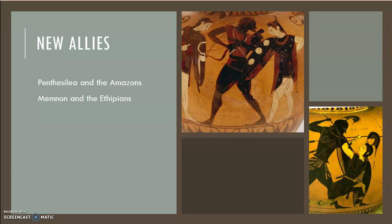After Penthesilea and the Amazons are killed, a new hero appears whose name is Memnon. Memnon is very much like Achilles in that his mother is a goddess — the goddess of dawn. Memnon and his people are the Ethiopians. I misspelled that on the slide, but it is Ethiopians as we spell it today. In antiquity they were just understood to be on the edges of the earth. Memnon fights against Achilles, and because he's the son of a goddess like Achilles, they're very evenly matched. It's only when the gods decide whose fate it is to die that Memnon eventually falls to Achilles, leaving the Trojans in a very precarious position.